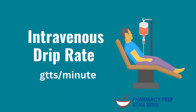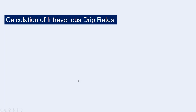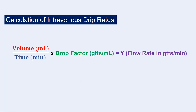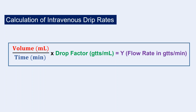Next, another commonly seen type of question is intravenous drip rate calculations. The unit for this is GTT per minute — GTT meaning drops per minute. The calculation of IV drip rates uses volume in milliliters, time in minutes, and the drop factor. The drop factor will be given, along with volume and time, and you can calculate flow rate in drops per minute.